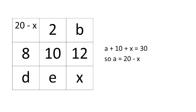If we move on to the diagonal containing A, C, and X, we get A plus 10 (since C equals 10) plus X equals 30. So we get that A equals 20 minus X.